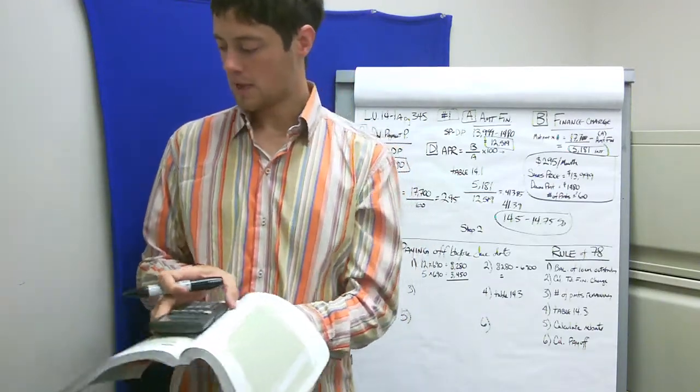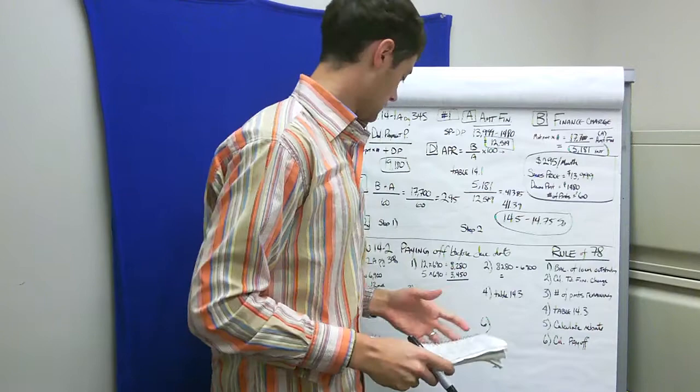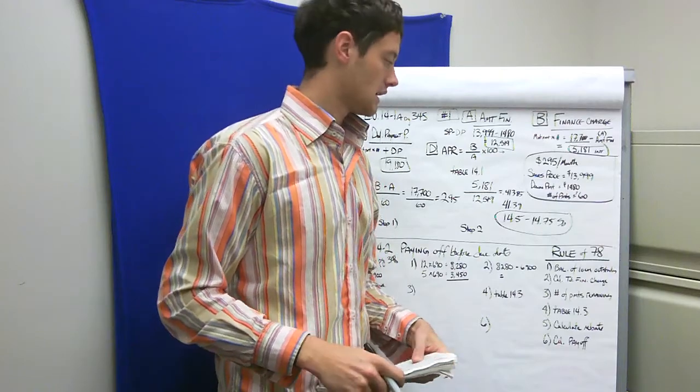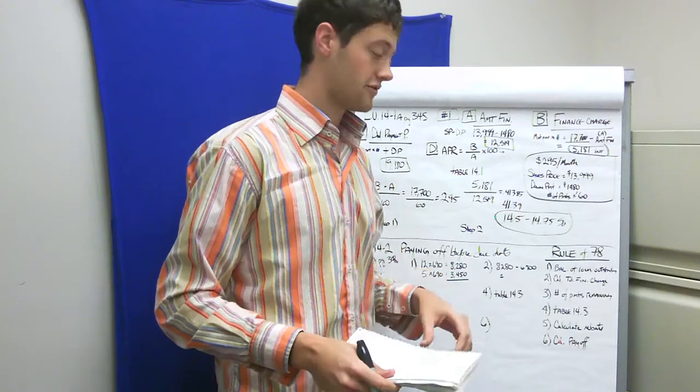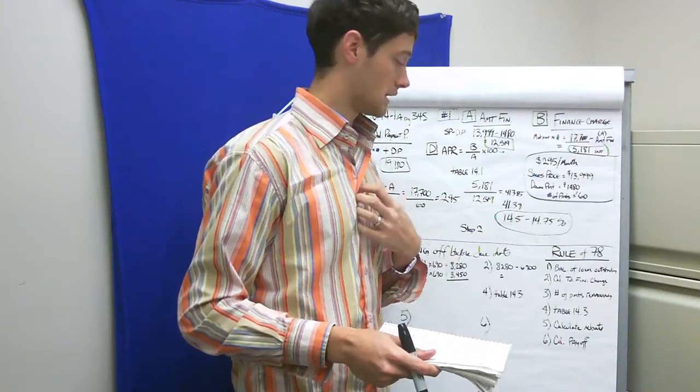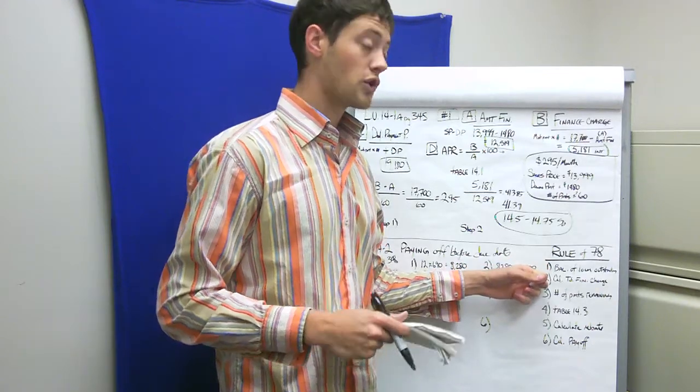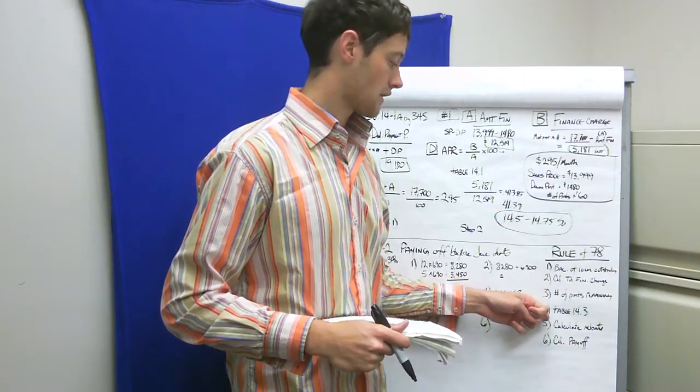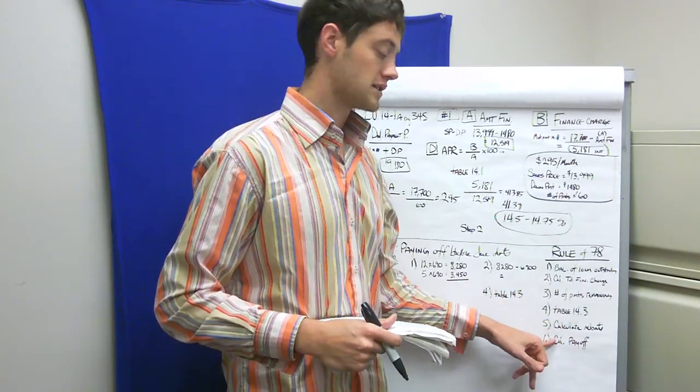The next section is on paying off, called Rule of 78, paying off loans beforehand. We're going to walk through the six steps of the Rule of 78. It ties into the U.S. rule we learned previously about paying off loans early and getting that credit or rebate of interest owed back to us. We calculate the balance outstanding, the total finance charge, the number of periods or payments remaining. We look that up in table 14.3, calculate our rebate, which allows us to calculate our payoff.